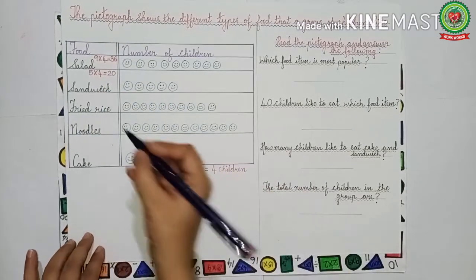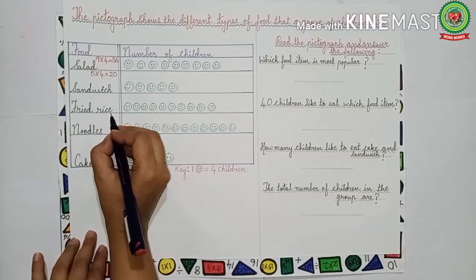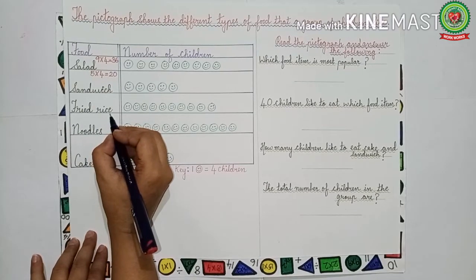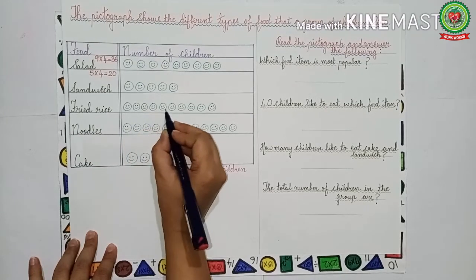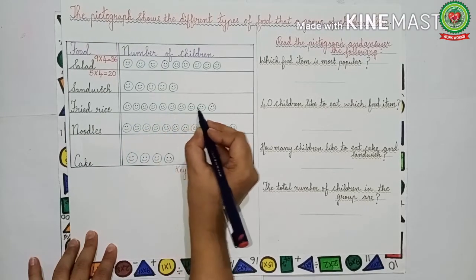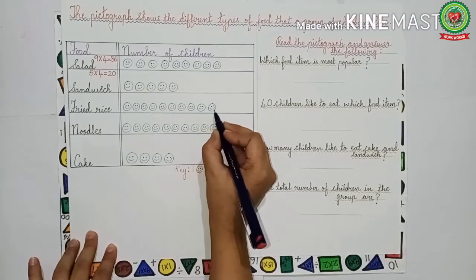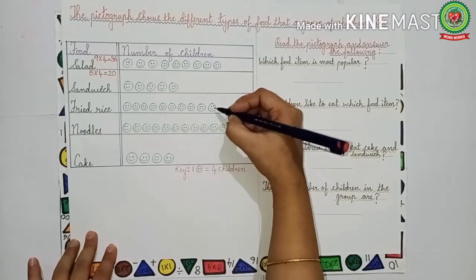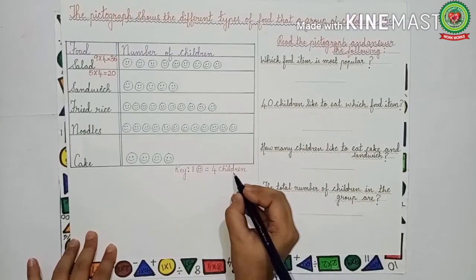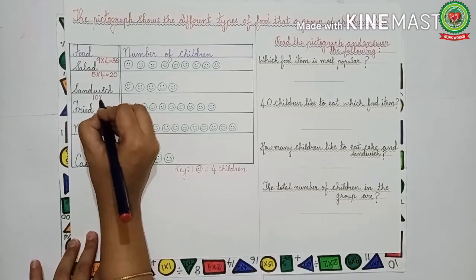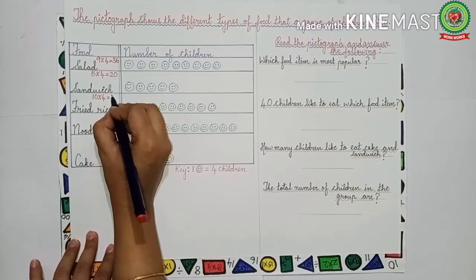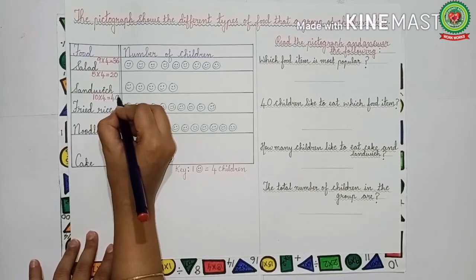Next is fried rice. Let us count the smiley faces: ten smiley faces. One smiley face is equal to four children, so we have to multiply ten by four. Ten fours are 40. We will write 40 over here.